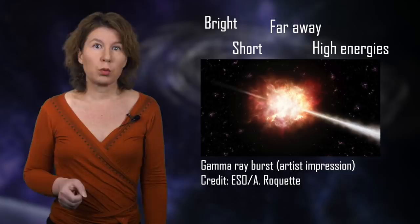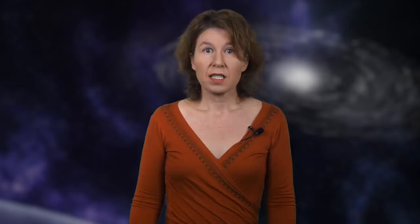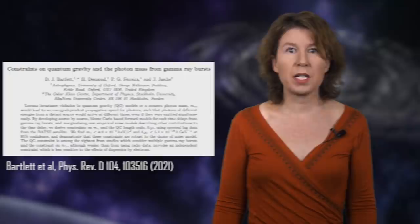If it doesn't, that would be evidence that the speed of light depends on the energy. Since the gamma-ray bursts are so far away, even tiny differences in the speed of light can add up to a noticeable delay. The most recent data on this were published just a few months ago by a group from Oxford and Stockholm. So far, there's no indication that Einstein was wrong.